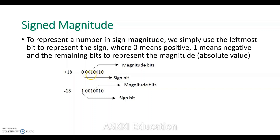So 7 bits are used for the magnitude. For +18 in 8-bit signed magnitude, the sign bit is 0. For -18, the absolute value representation is the same in 7 bits, except the sign bit becomes 1, denoting a negative number.